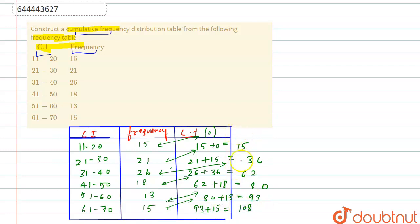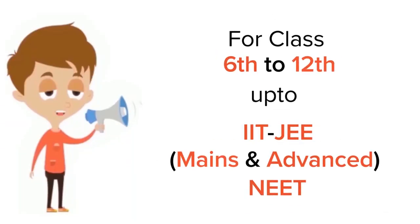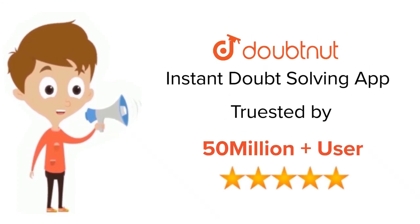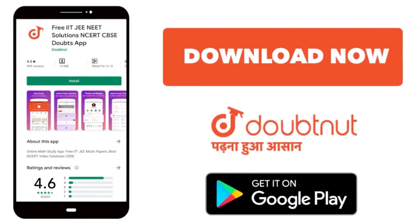So this is our cumulative frequency table, and this is our answer. Thank you for watching this video. For class 6 to 12, IIT-JEE and NEET level — trusted by more than 5 crore students. Download the Doubtnut app today.